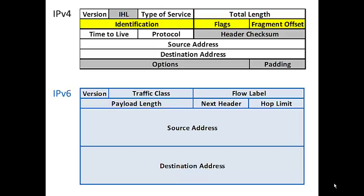Identification, flags, and fragment offset are functions that IPv6 does not need to support. In IPv4, if a router receives a packet too big to process, it can break the packet in half, attach new headers to both halves, and forward them — but this slows the router considerably. In IPv6, if a packet is too big, the router simply discards it and sends a message back to the sender saying the packet was too big and needs to be resent in a smaller size. This puts the burden back on the source instead of the router, allowing those three fields to be stripped out.